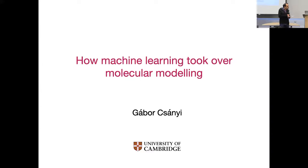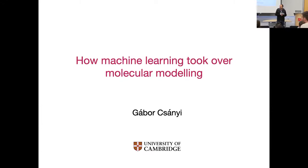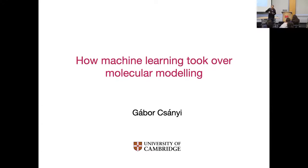He's no stranger to MIT — he got his PhD from MIT in 2001. Prior to that, he completed an undergrad degree in mathematics at the University of Cambridge, then went back to Cavendish Laboratory in Cambridge and has been there ever since. He has really pioneered a lot of methods for machine learning and data-driven methods in molecular modeling, materials, and other kinds of chemistry.